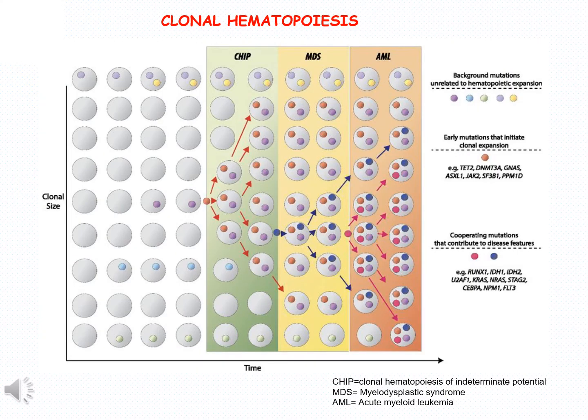The development of clonal hematopoiesis is shown diagrammatically in the next slide, whereby very early in life we have some hematopoietic stem cell mutations, followed by dissemination of mutations in a condition called clonal hematopoiesis of indeterminate potential. As time goes by, this condition can develop to myelodysplastic syndrome, and eventually a small percentage will develop acute myeloid leukemia. A number of genes are found to have mutations in hematopoietic cells, including RUNX1, IDH1, IDH2, and others.